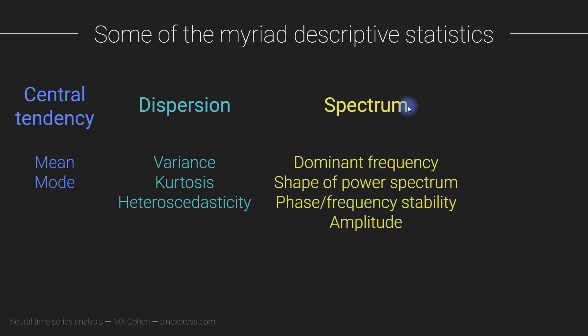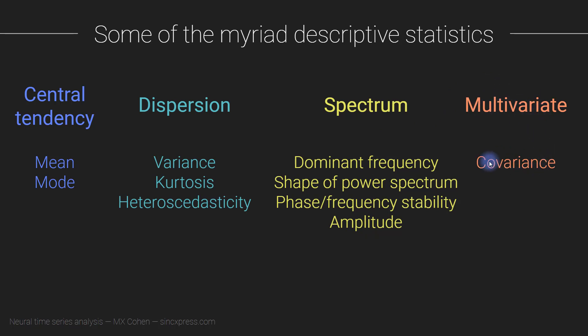We also have descriptive statistics related to the spectrum of the signal: dominant frequency, shape of the power spectrum, frequency stability, amplitude measures, and so on. For multivariate signals, we can also talk about covariance stationarity — whether the correlation structure across different channels is the same or changing over time. These descriptive statistics are what make the definition of stationarity ambiguous, because a signal can be mean-stationary but variance non-stationary.